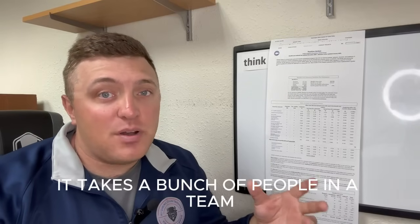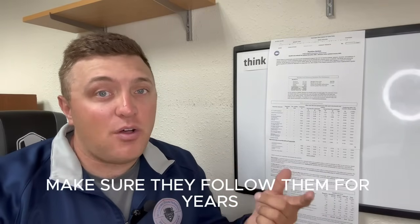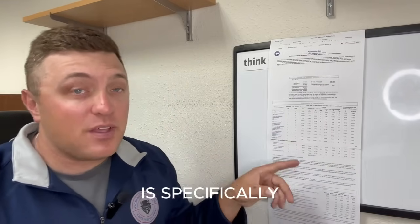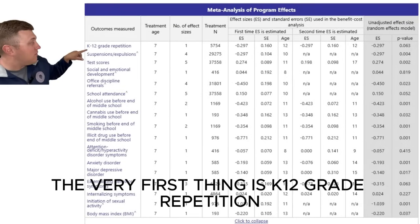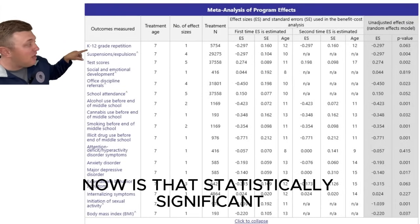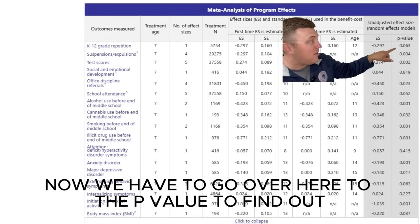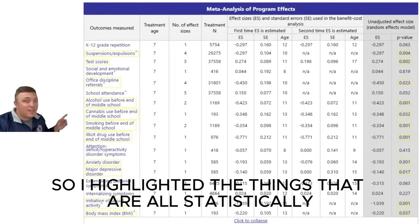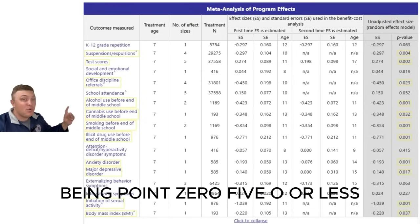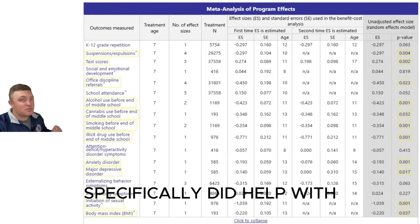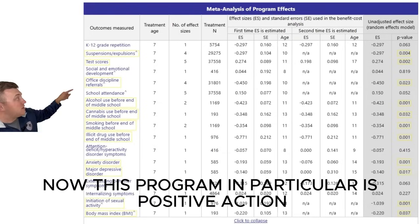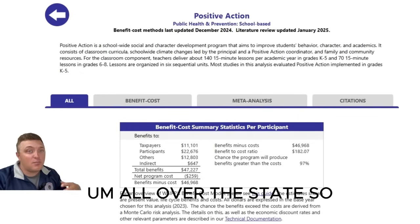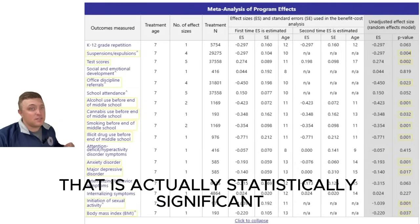For these studies to happen, it takes a whole team of people. They have to study the kids, make sure they follow them for years, always monitoring that what the program is doing is specifically getting at the outcome measured. For example, the very first outcome listed here is K-12 grade repetition. Is that statistically significant? We have to look at the p-value — it's 0.063, which is not the correct number. We need 0.050 or less. I've highlighted the things that are all statistically significant based on their p-values being 0.050 or less. There's a lot of different things that this program specifically did help with. This program in particular is Positive Action, a program that we implement across the state and are already teaching students all over Wyoming.